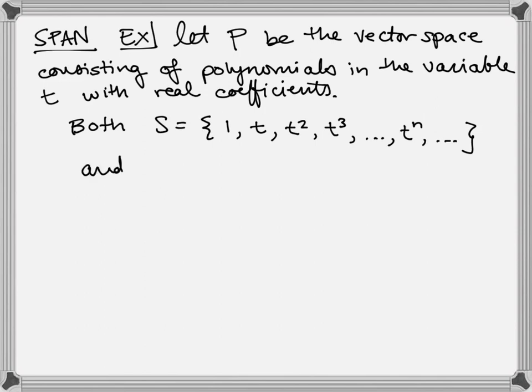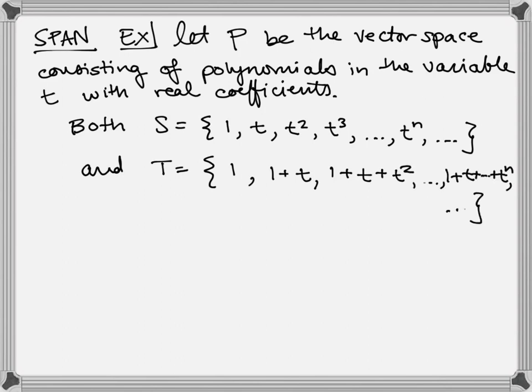The second choice is going to be the set T, where the first element is 1, the second element is 1 plus t, the next element is 1 plus t plus t squared, and so on. I'm taking all of these finite sums that start at 1 and add up all the powers of t up to n, then n plus 1, then n plus 2. So both of these sets are infinite.